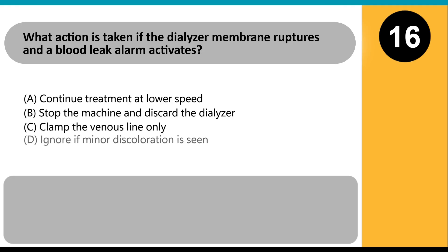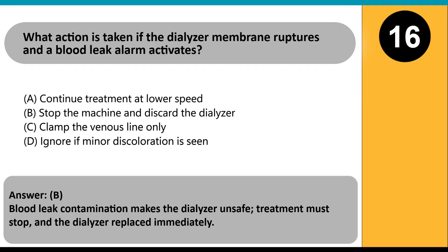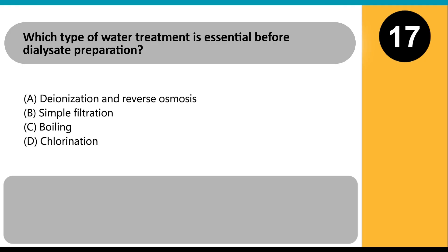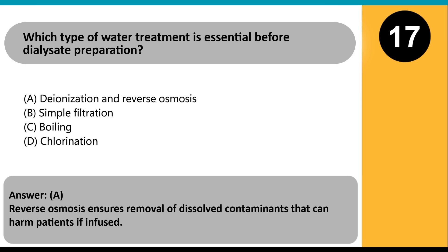What action is taken if the dialyzer membrane ruptures and a blood leak alarm activates? A. Continue treatment at lower speed. B. Stop the machine and discard the dialyzer. C. Clamp the venous line only. D. Ignore if minor discoloration is seen. Answer B. Blood leak contamination makes the dialyzer unsafe; treatment must stop and the dialyzer replaced immediately. Which type of water treatment is essential before dialysate preparation? A. Deionization and reverse osmosis. B. Simple filtration. C. Boiling. D. Chlorination. Answer A. Reverse osmosis ensures removal of dissolved contaminants that can harm patients if infused.